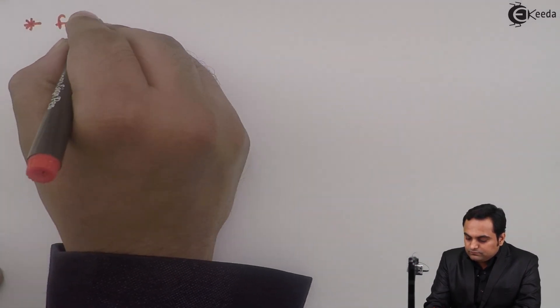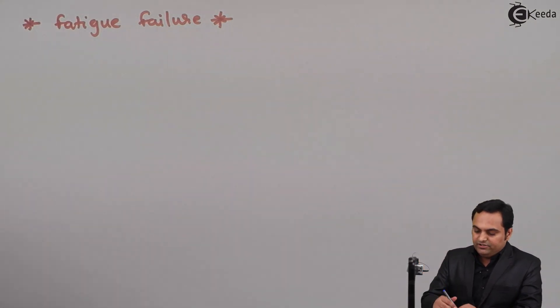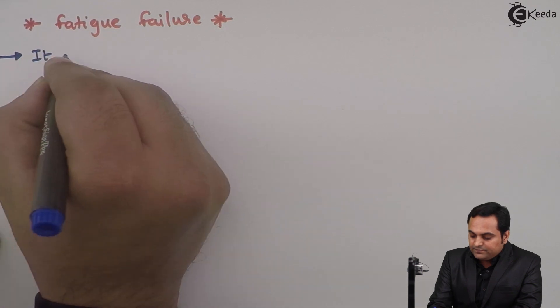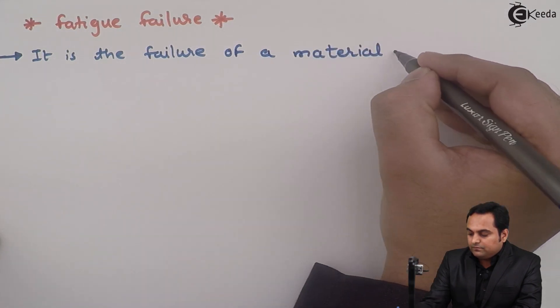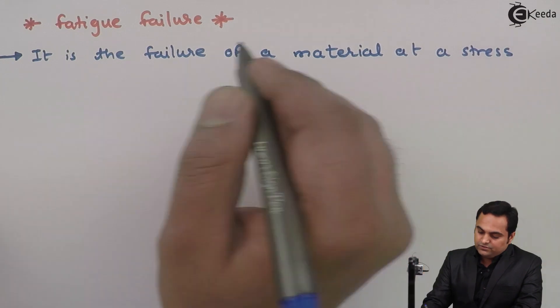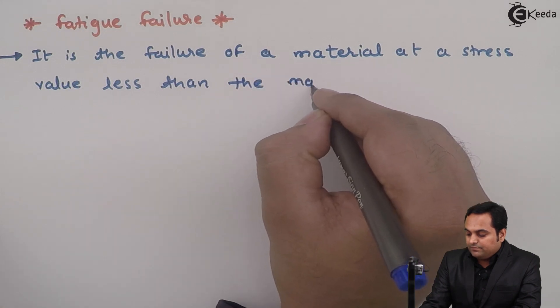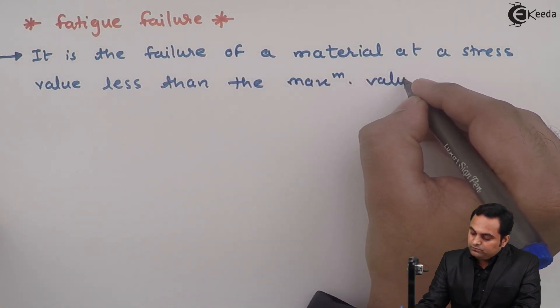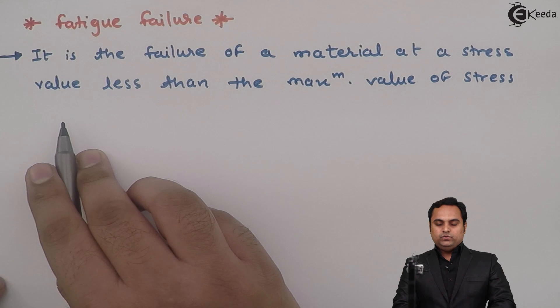In this video we will see what is meant by fatigue failure and draw some graphs related to that. The definition of fatigue failure is: it is the failure of a material at a stress value less than the maximum value of stress.